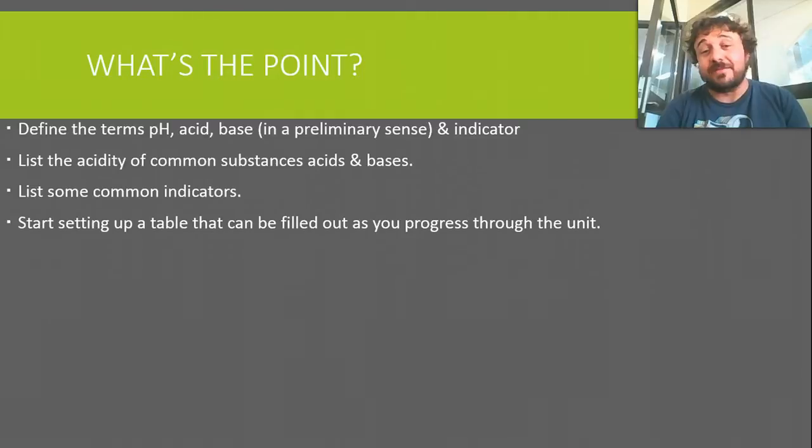So what's the point? Today, by the end of it, you should be able to define the terms pH, what an acid is, what a base is in the preliminary year 11 sense, and what an indicator is. You also want to be able to list the acidity, whether it's an acid, base or neutral, for some common substances. List some common indicators, and we're going to have a table started that you'll be able to fill out as we progress the unit of common acids, bases and neutral substances.